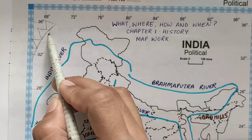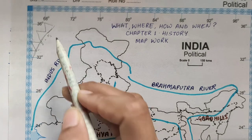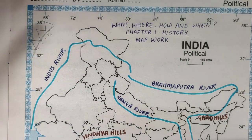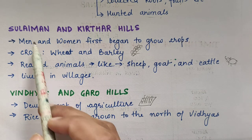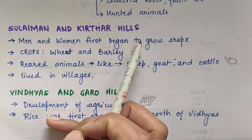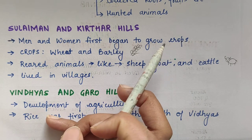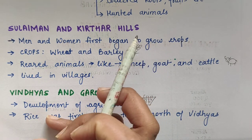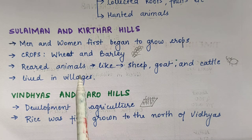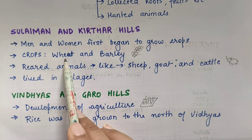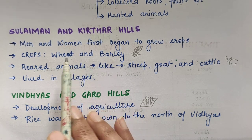People also lived near the Suleiman and Kirtar Hills. What were they doing? Men and women first began to grow crops here. They started growing crops like wheat and barley — which kind of crops were they growing? Wheat and barley.